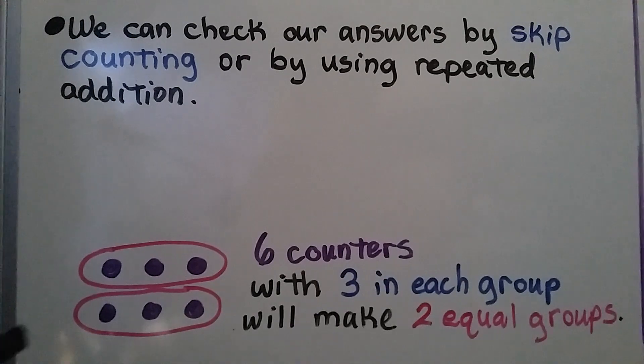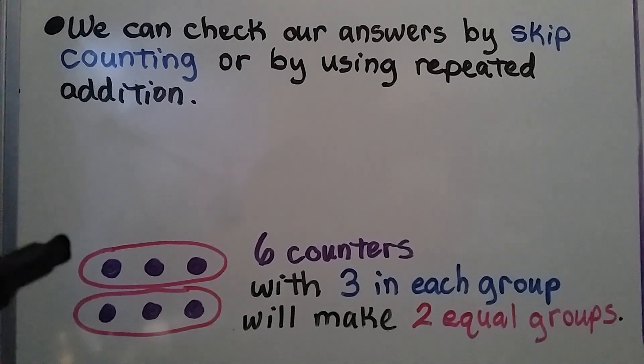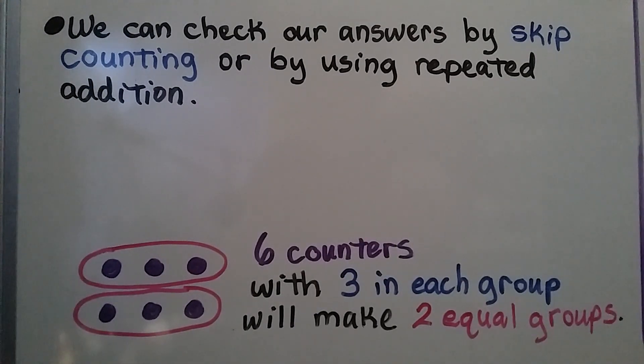Here we have six counters with three in each group. It'll make two equal groups.